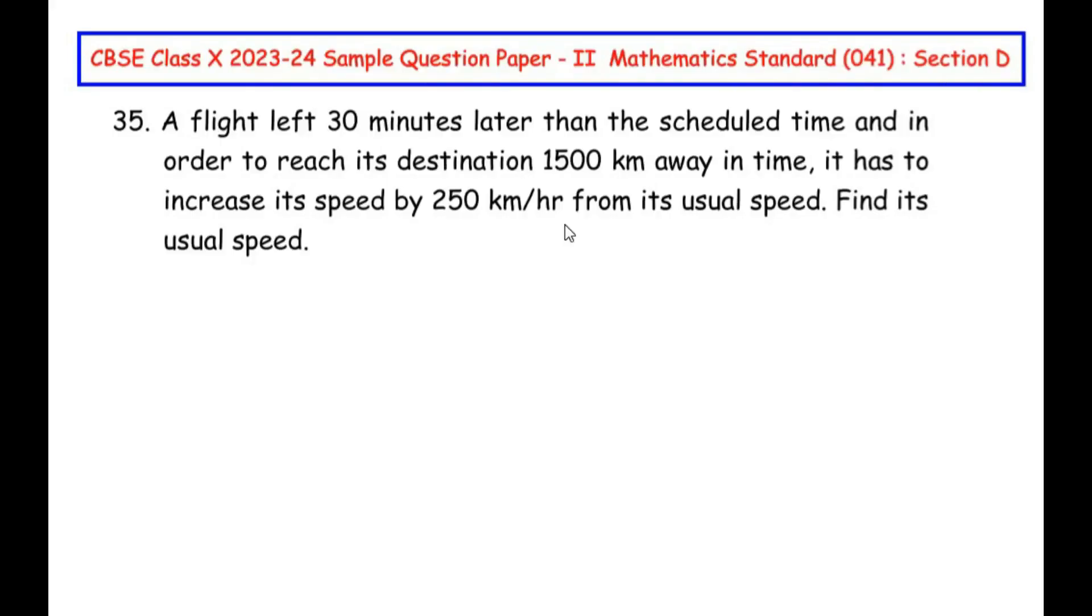Now, this question is from the quadratic equations chapter. A flight left 30 minutes later than the scheduled time, and in order to reach its destination 1500 kilometers away in time, it has to increase its speed by 250 kilometers per hour from its usual speed. Find its usual speed.